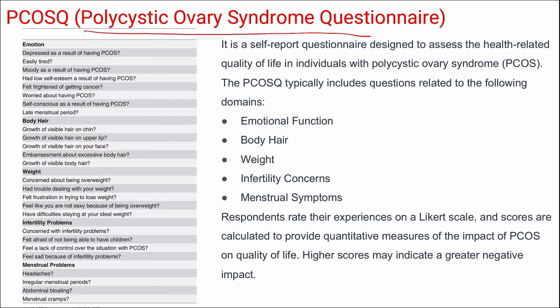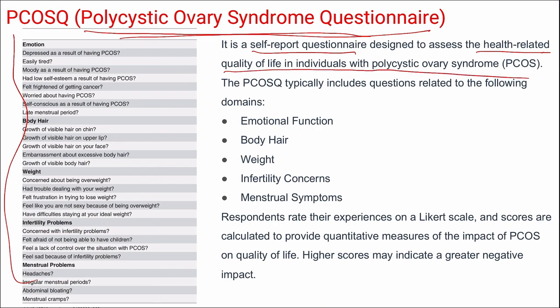Next is the Polycystic Ovary Syndrome (PCOS) Questionnaire — a self-reported questionnaire for assessing health-related quality of life in individuals with PCOS. It focuses on domains such as emotional function, body hair, weight, infertility concerns, and menstrual problems. Patients respond on a Likert scale, and the impact of PCOS on quality of life is measured, with higher scores indicating greater negative impact.